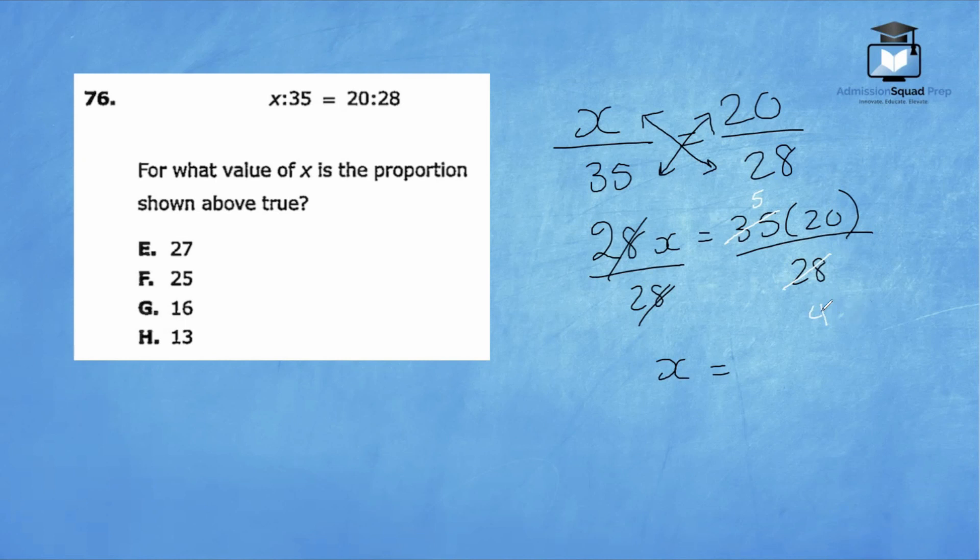Finally, we know that 20 and 4 share a factor of 4. 4 divided by 4 is 1, and 20 divided by 4 is 5. Our last step is simply to multiply 5 times 5. So the final answer is 25, and that is answer choice F.